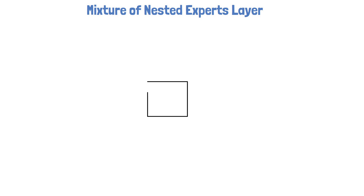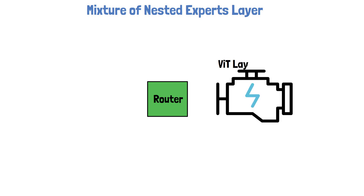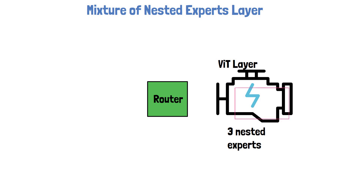Let's start with a high-level illustration of a Mixture of Nested Experts layer. Later on, we will add more details. In each layer, we consider two components: one is a router network, and the second is encapsulated as a regular vision transformer layer. For this example, we defined that there are three nested experts. One is the full vision transformer layer, another one represents half of that layer's weights, and the third one represents a quarter of the weights. This is just an example and can be controlled.